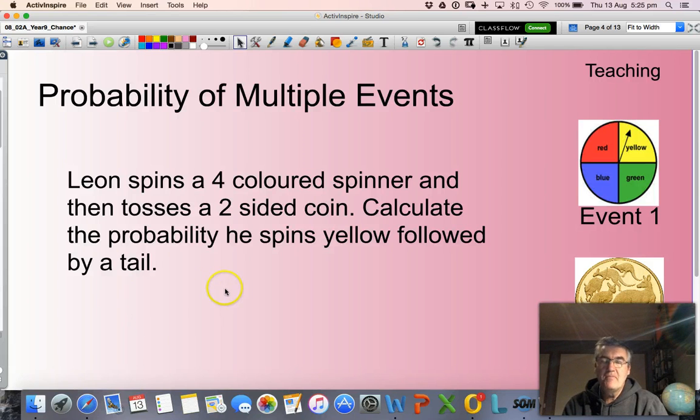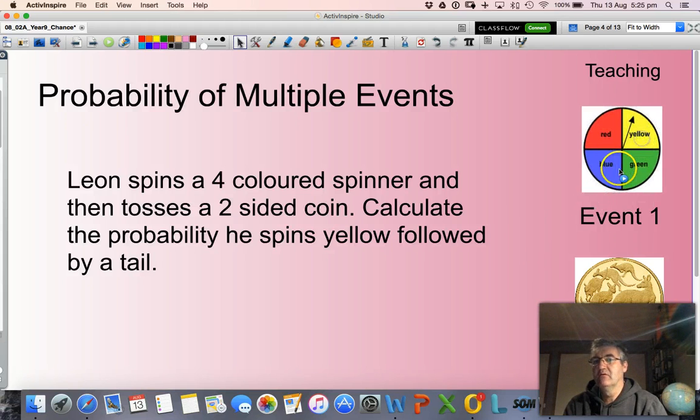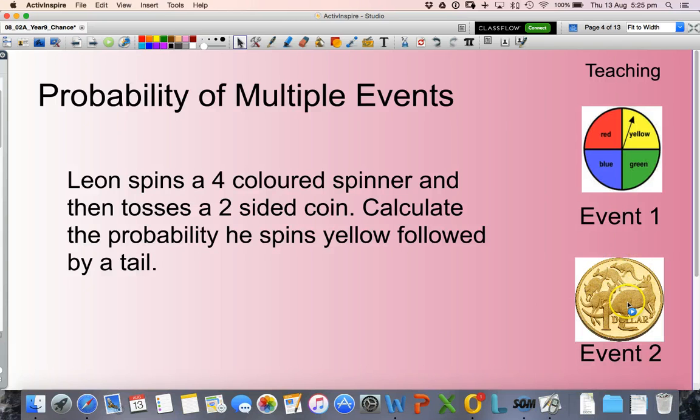As you can gather there are two events here. One event is spinning a spinner and we want to land on the yellow, and the other one is tossing a coin and we wish to land on a tail.